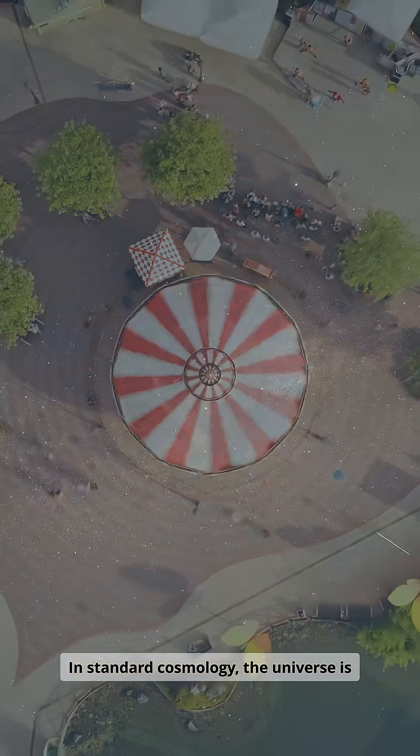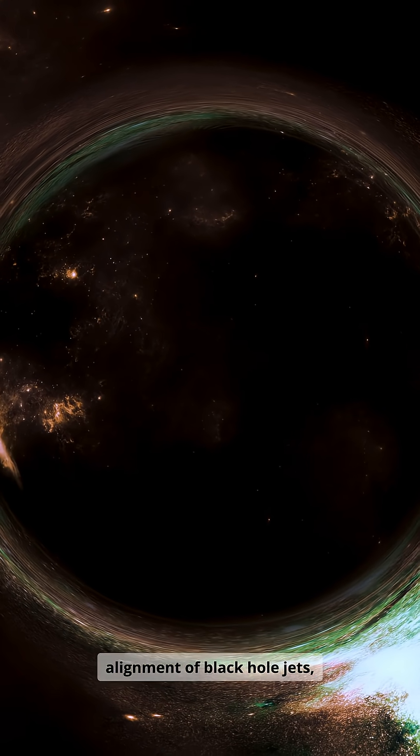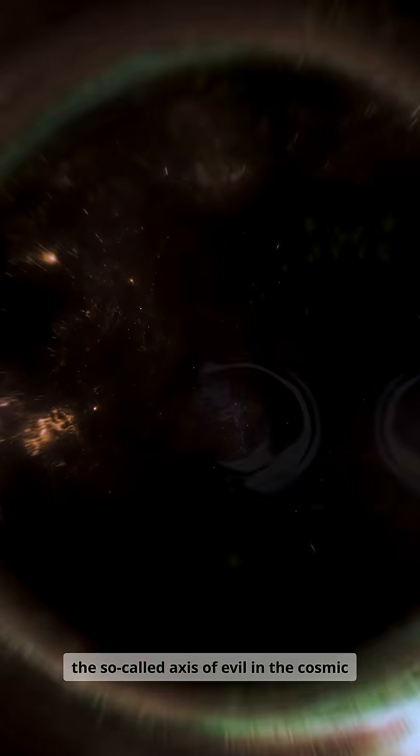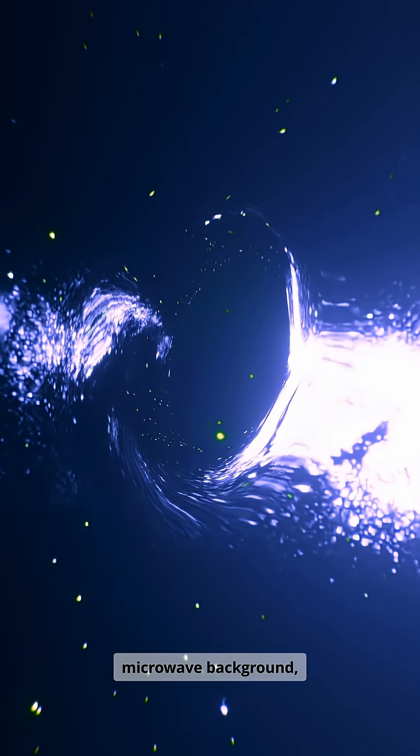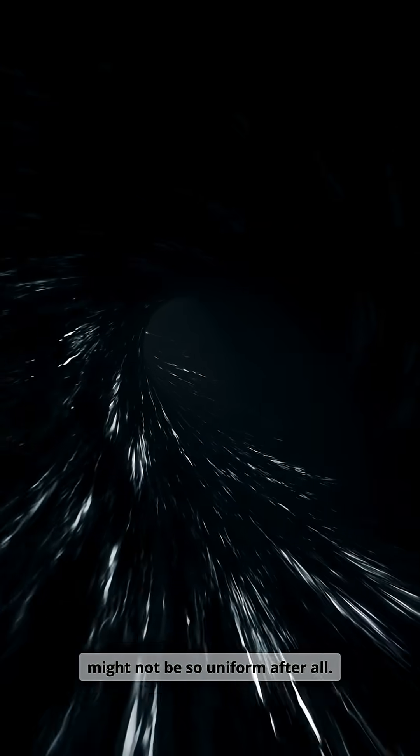In standard cosmology, the universe is assumed homogeneous and isotropic. But the observed alignment of black hole jets, the so-called axis of evil in the cosmic microwave background, and phenomena like dark flow suggest that the universe might not be so uniform after all.